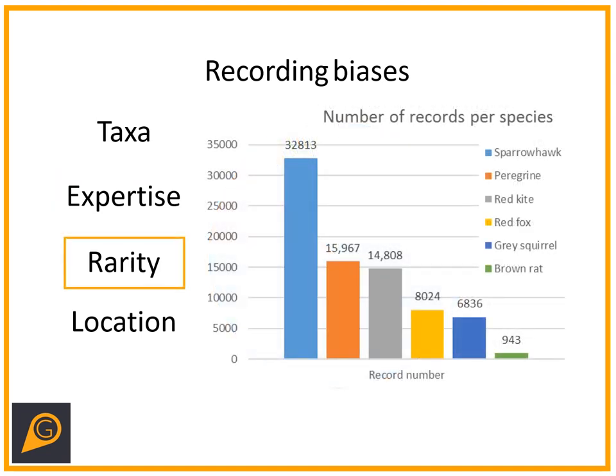Similarly to taxa bias, we have rarity bias. People tend to record things that are interesting and rare, and tend not to look at more common species. In our dataset we have over 32,000 sparrowhawk records but only around 900 brown rat records, which I don't think is particularly representative for London. So it's about trying to record everyday common species and building a bigger picture of what's actually out there — as opposed to a more casual, rare-species-focused approach.